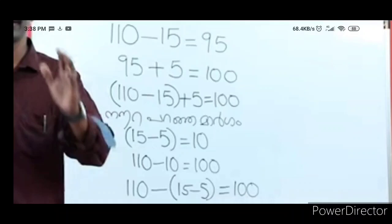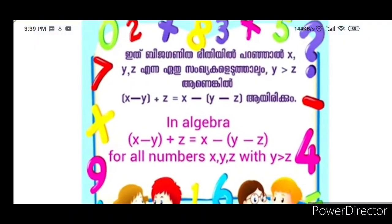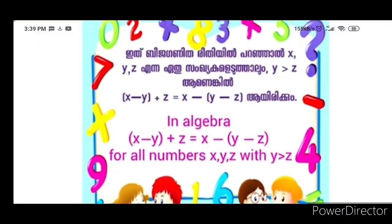Here we will add: 10 minus 15 plus 5. So this is 10 minus 10. We will add 10 minus 10. 110 is the amount. This is 110 minus 15 plus 5 equal to 100. Our formula: x minus y plus z is equal to x minus y plus z, for all numbers x, y, z with y greater than z.